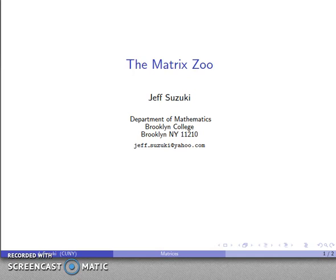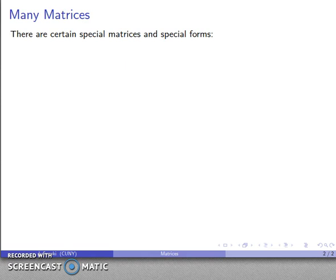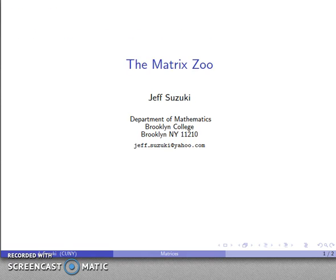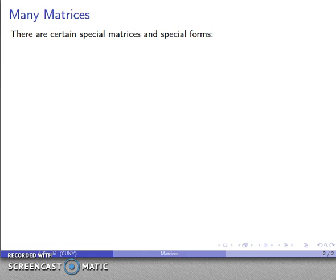Let's take a look at what we might think about as the matrix zoo. There are a number of special terms and special types of matrices that are important. Matrices are fairly important and we want to be able to distinguish between certain types, so let's go ahead and take a look at some of those forms.